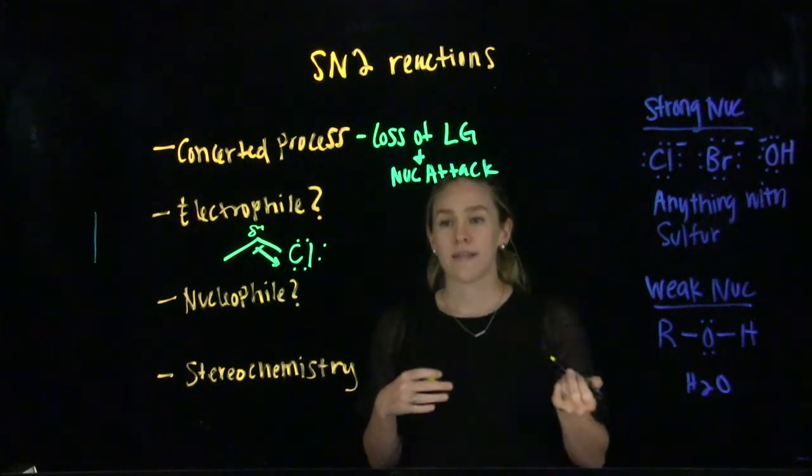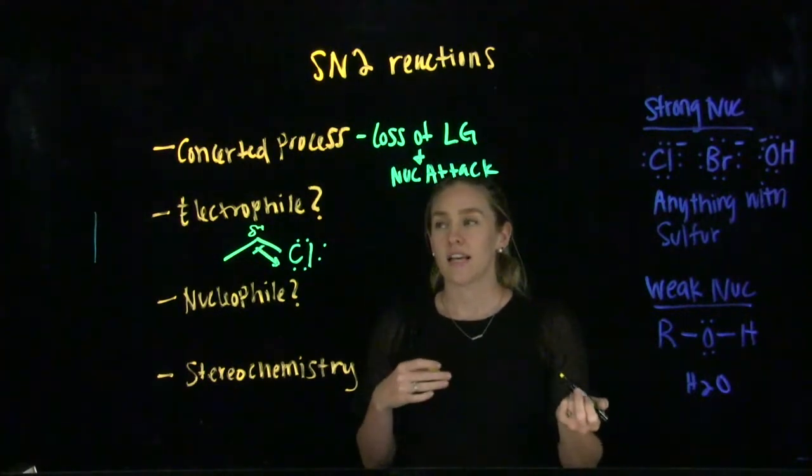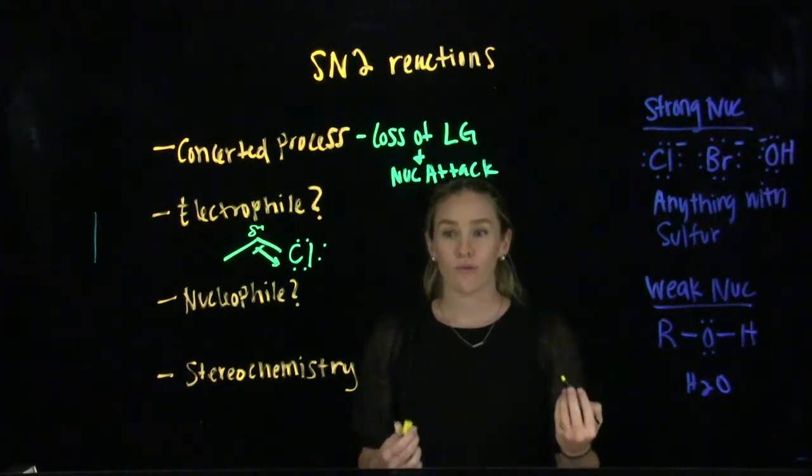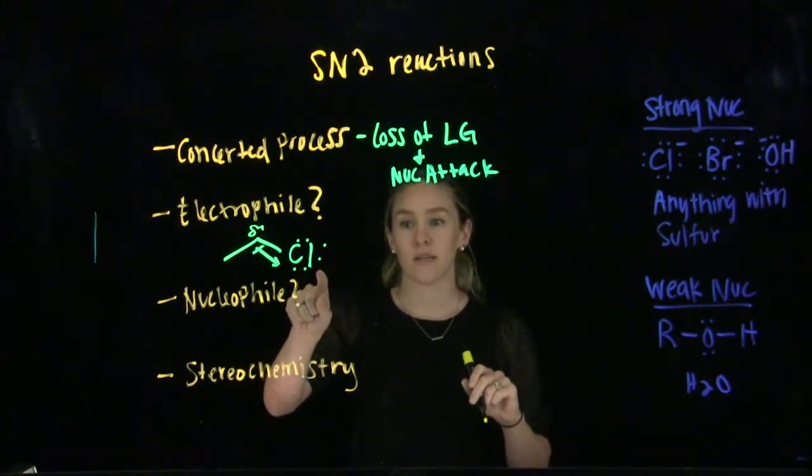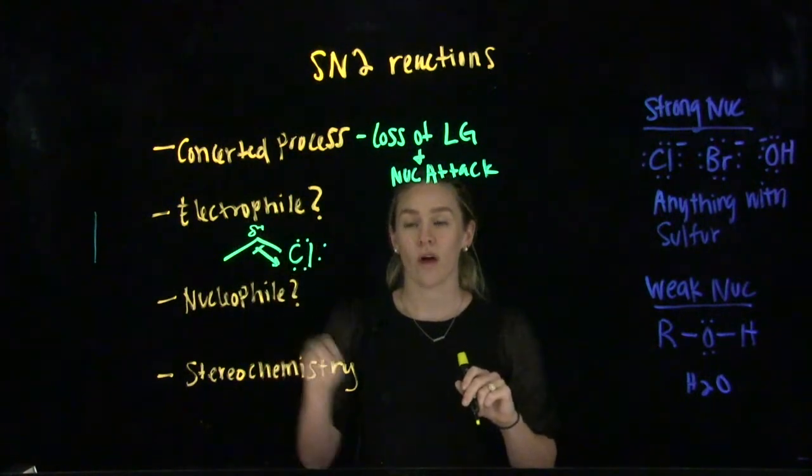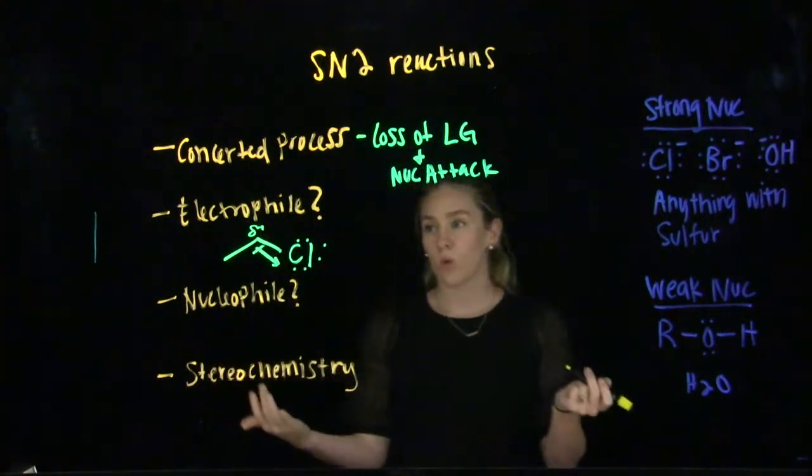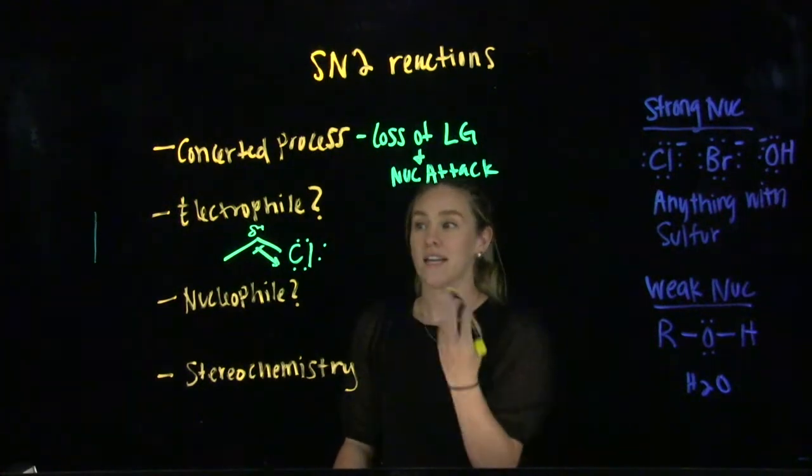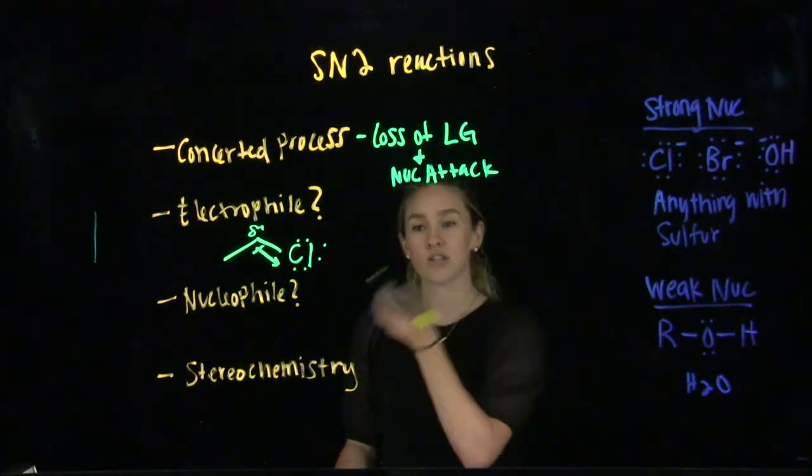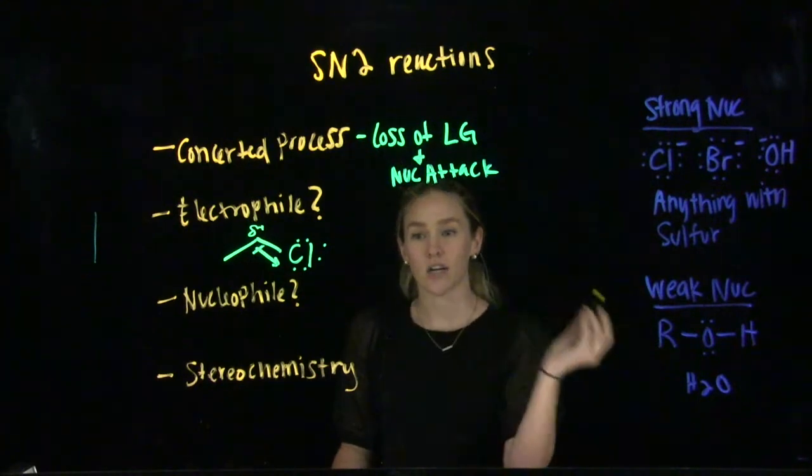What we need to know about this is what is most favorable for an SN2 reaction. Do we want our leaving group to be super crowded with other groups or do we want it to be more open? The more scientific way to put that is do we want our electrophilic center to be primary, secondary or tertiary?